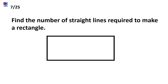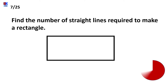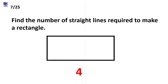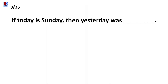Seventh question is: find the number of straight lines required to make a rectangle. And the answer is 4. Even if you didn't know the answer, it was very easy — just by counting the number of straight lines you could have come directly to the answer, which is 4.